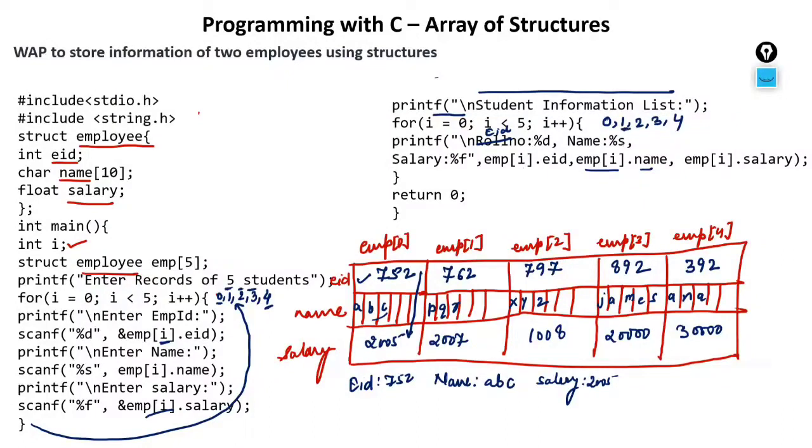Again, what will happen? The value of i will increment to 1. So now it will print emp[1].eid which is 762, emp[1].name which is PQR, emp[1].salary which is 2007.